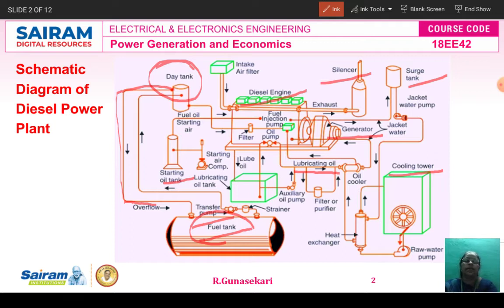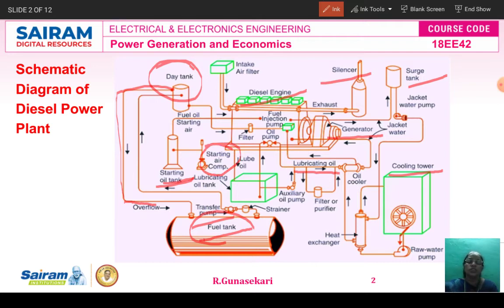This is the RMR, also indicated in the schematic diagram. The next is the starting oil tank; a starting air compressor is also used for starting purpose. This is the diesel engine. The diesel engine may be a 4-stroke engine or a 2-stroke engine.